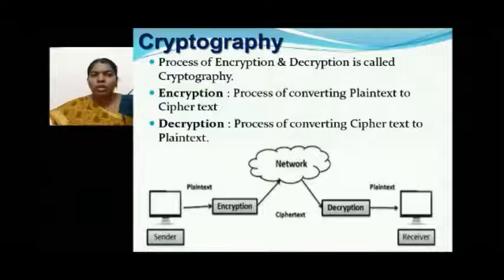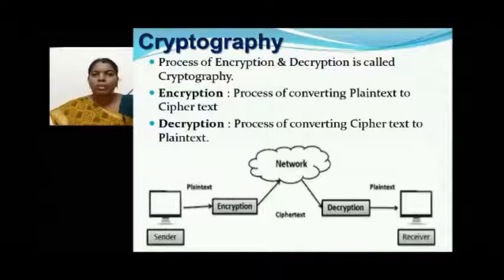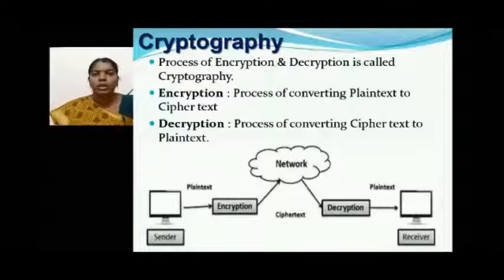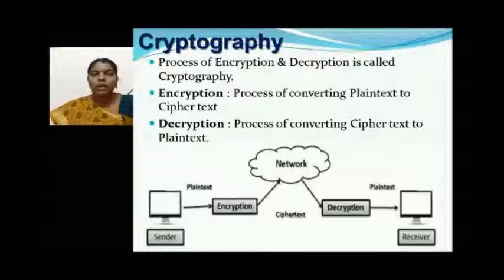The process of converting plain text into ciphertext — that is, an unreadable format — we call that encryption. This encrypted data is transferred through the open network and reaches the receiver, where the ciphertext is converted back into plain text. We call that process decryption, and it is handled at the receiver. This overall process of encryption and decryption we call cryptography.